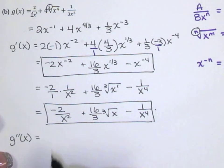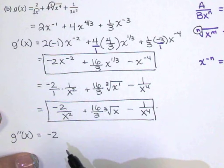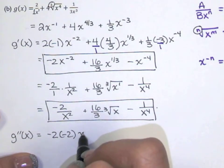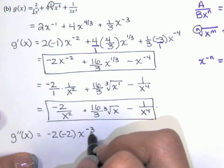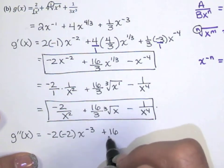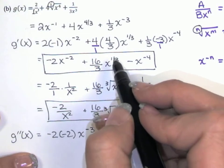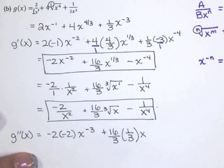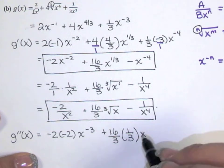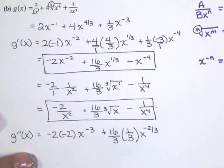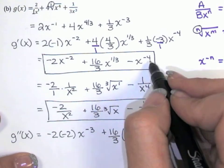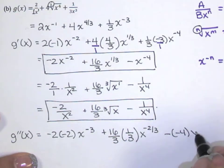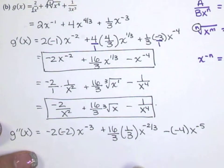Since we're taking the second derivative, I'll use the form with constants times x to a power. I bring the constant down, then bring the power down and multiply by x to the one less power — negative 2 minus 1 is negative 3. Here I bring the constant down, then the power, which is one-third, and multiply by x to one less power: one-third minus 1 is one-third minus three-thirds, which is negative two-thirds. Then I bring the negative 1 down, bring the power down, and multiply by x to the one less power.